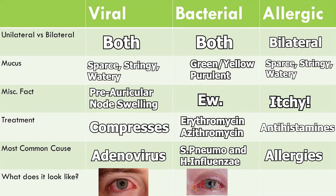For allergic conjunctivitis, it's almost always going to be bilateral. It has basically the same watery discharge as viral, but it's very, very itchy — and that's the main differentiating factor. Because it's allergic, you treat it the same way you would regular allergies, with over-the-counter antihistamines. If that doesn't work, you can try antihistamine drops.